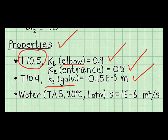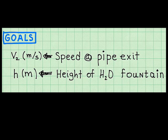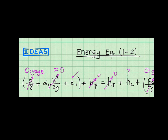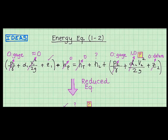For water, table 8.5 shows that the kinematic viscosity is 1 times 10 to the minus 6 meters squared per second. Goal 1 is the mean velocity of the water at the pipe exit. Goal 2 is the height of the fountain at the pipe exit. To find the velocity at section 2, I apply the energy equation, where section 1 is the reservoir surface and section 2 is the pipe exit.